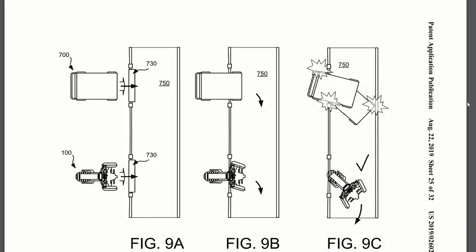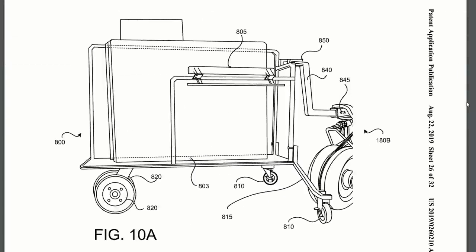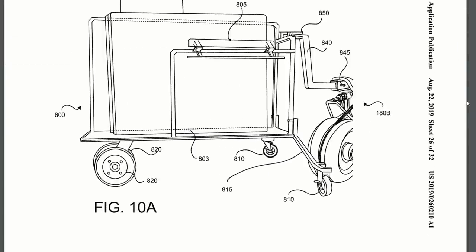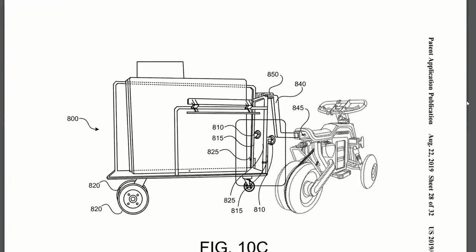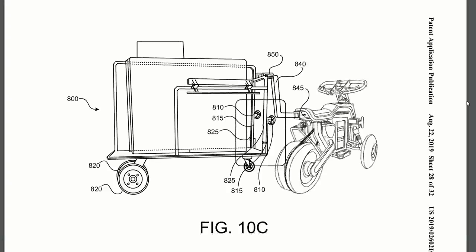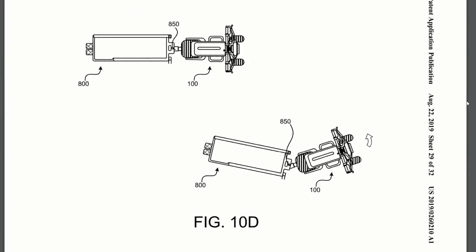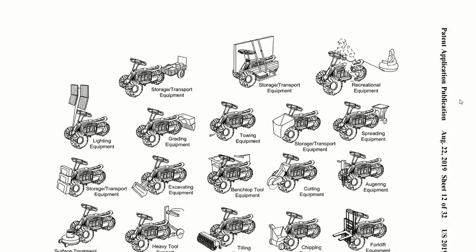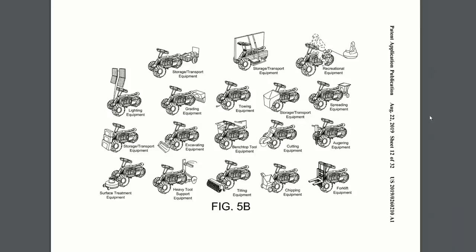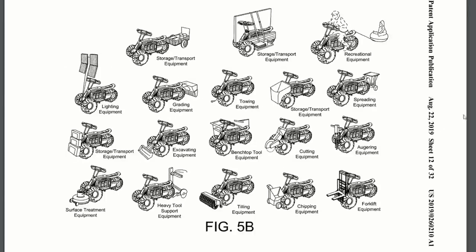Some of the accessories listed and pictured in the patent are a trailer and towing capability, job site lighting, a forklift. There's a couple configurations of this one. I think the one with the forks next to the single wheel is a dumb idea and it looks really unstable, but on the other end it might work. There's also landscaping equipment attachments. There's grading equipment, a snowplow blade, a seed and fertilizer broadcaster, an auger, tiller, chipper, and lawnmower attachments.